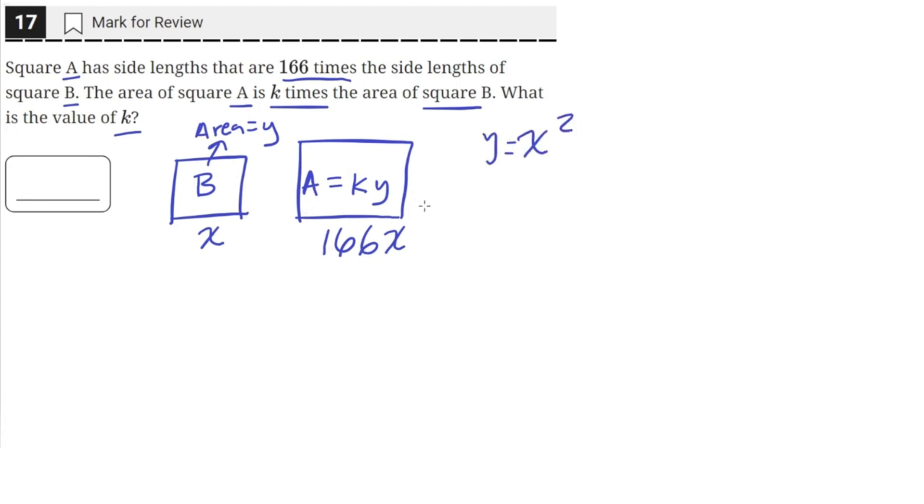And we know that the area of square A is just going to be 166x squared. If we simplify this, we'll get that 166 squared times x squared is the area of square A. And the area of B is just x squared.